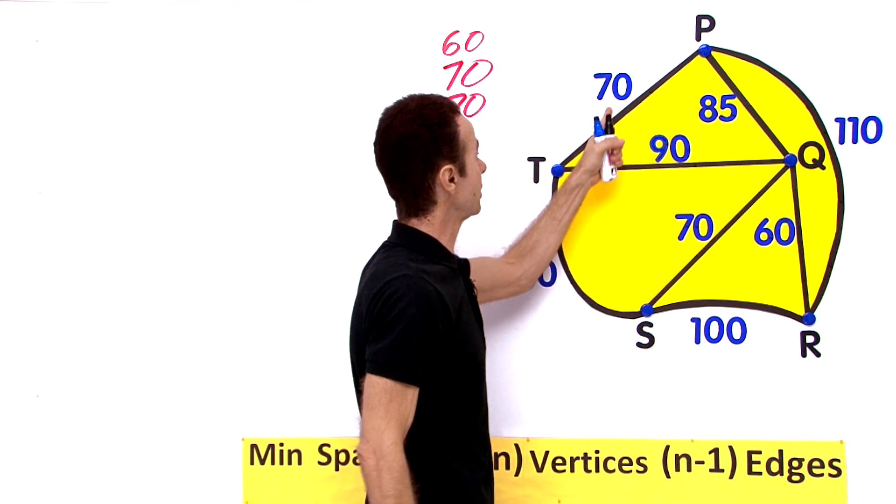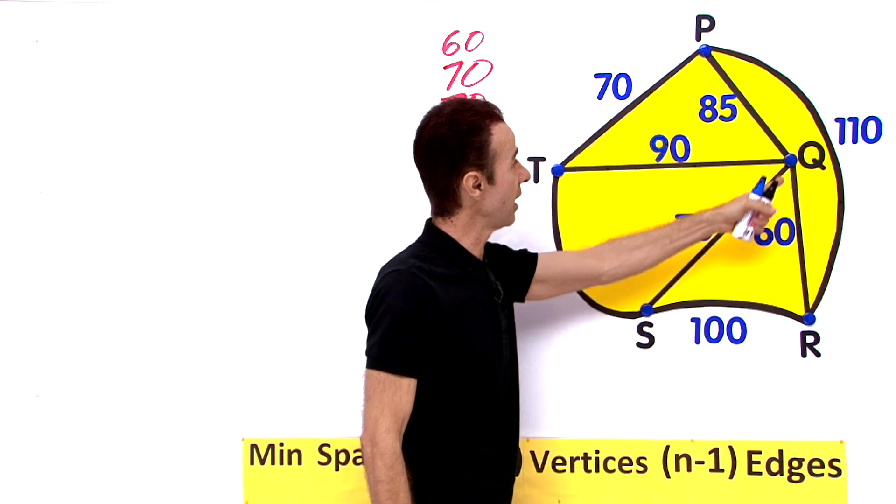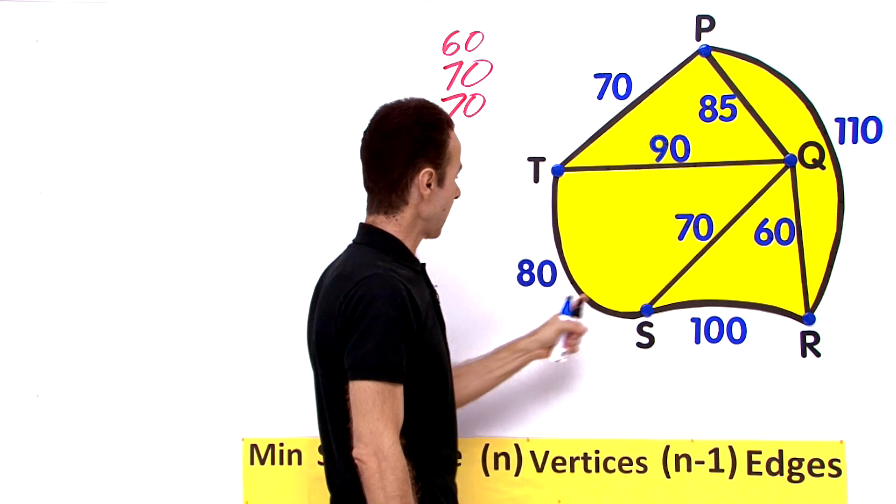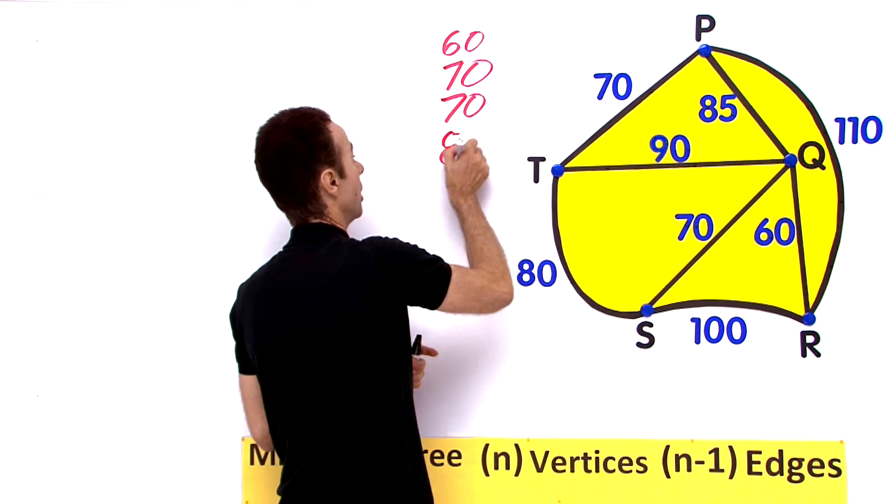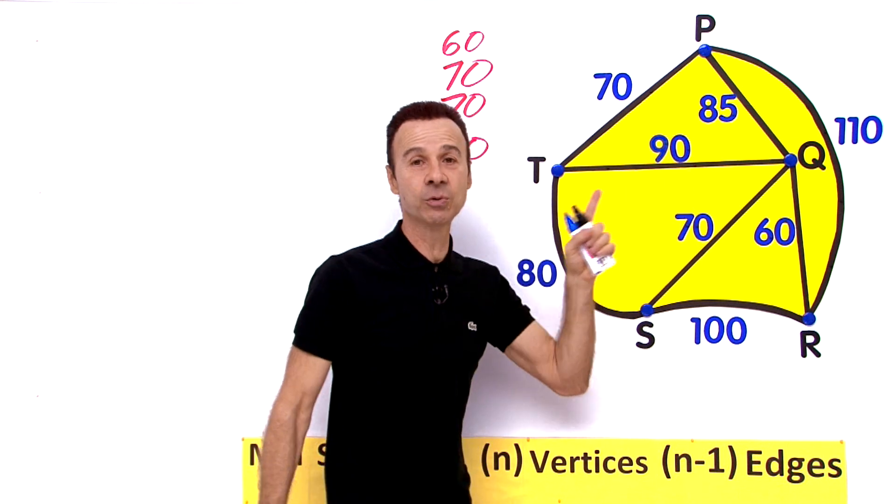Do we have any higher? Actually there is another 70 right there. Let us go higher than 70, 75 maybe? No 75. Okay 80 is next. There is 80. Okay we hit 80. We are not going to find, we are not going to go for 85 and 90. Why is that?